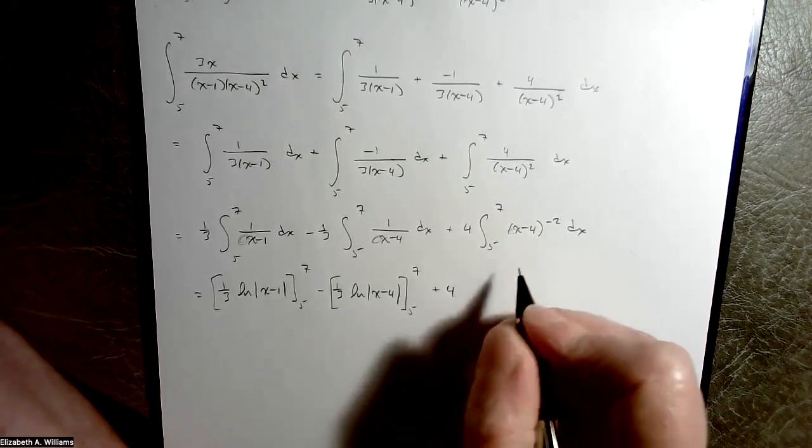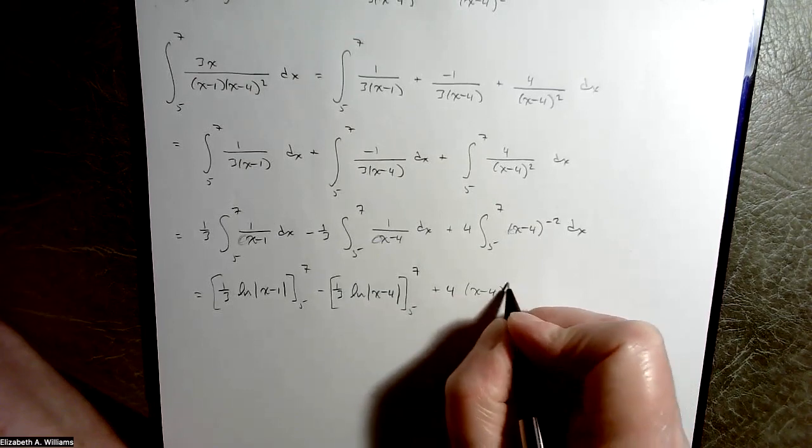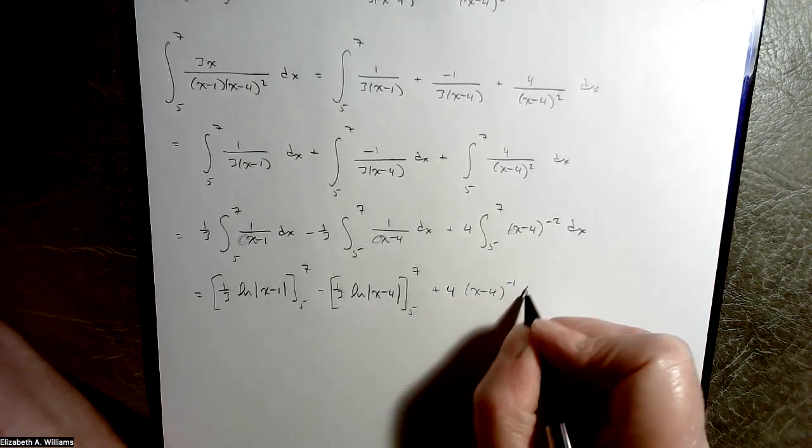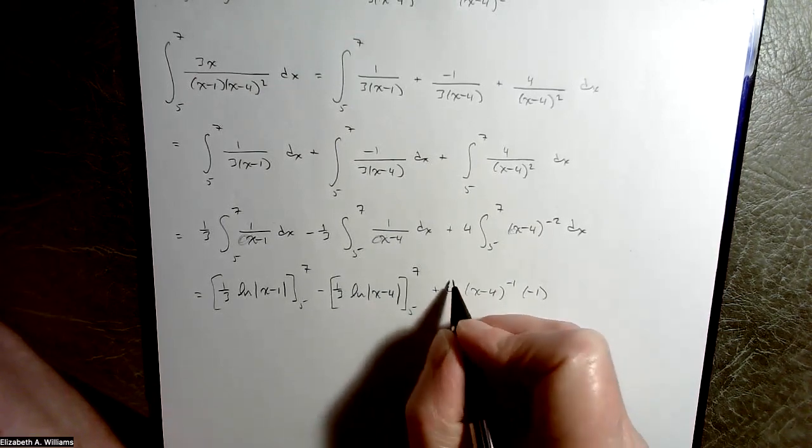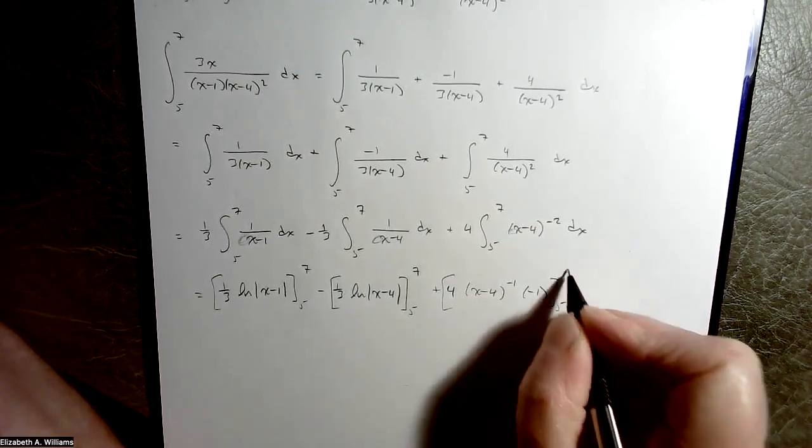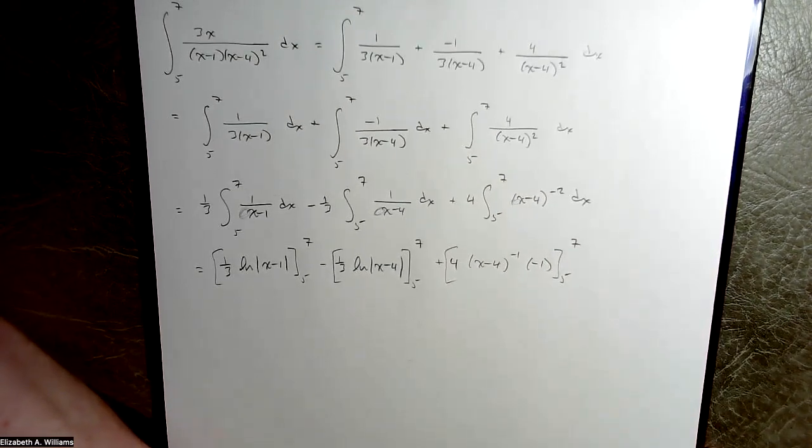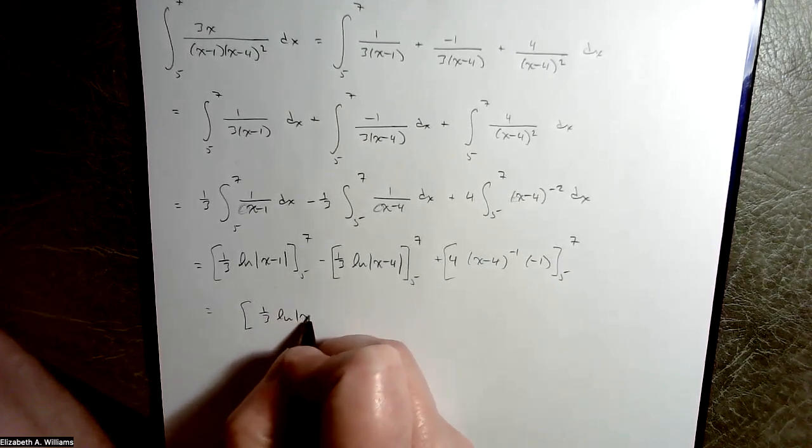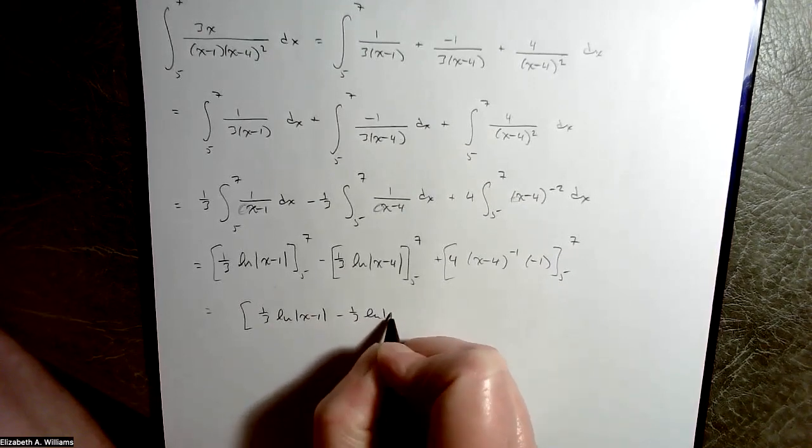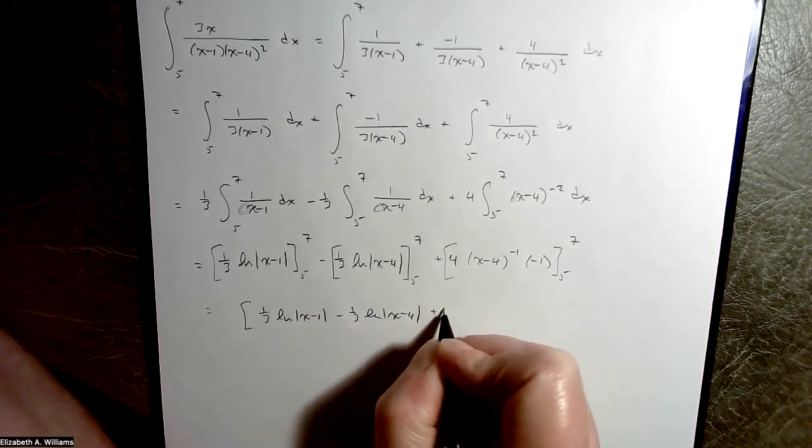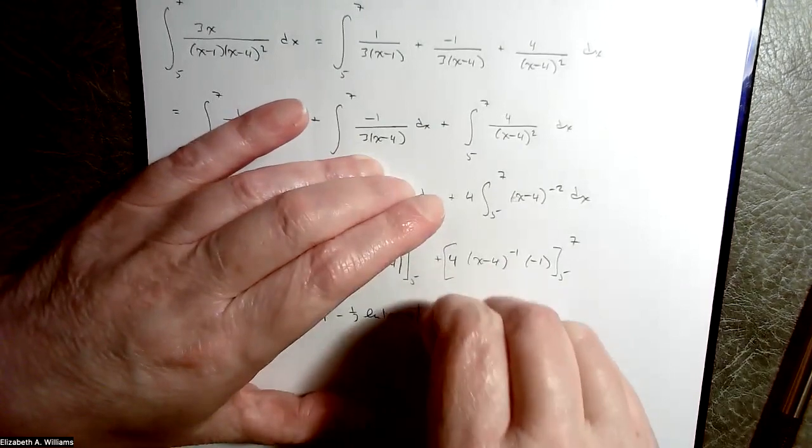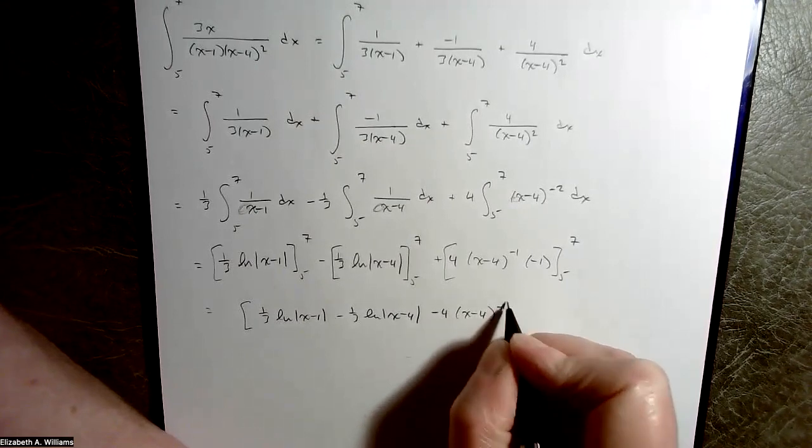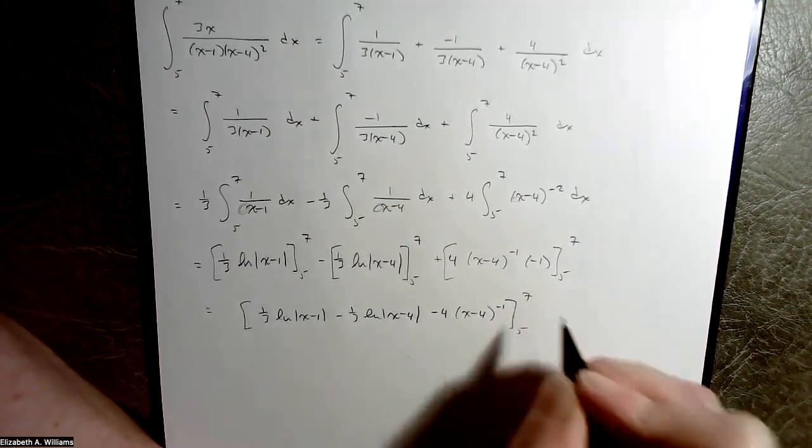Then we're subtracting 1/3, and this is going to be the natural log of x minus 4, evaluating that from 5 to 7. And then 4, add 1 to the power, divide by the new power, so that's minus 4 times (x minus 4) to the minus 1, evaluating from 5 to 7 as well.